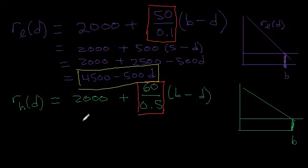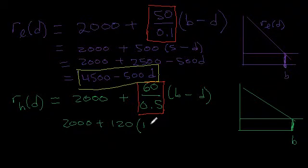Now let's continue on with the high income households. So we have 2000 plus 60 divided by 0.5, we said that was 120. And now we need to choose something for B, and it's a little bit farther out. But let's just choose something that's a bit more than 5, but still manageable. How about 10? Minus D.